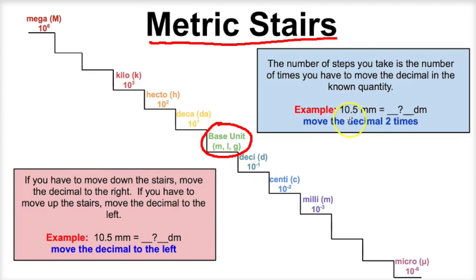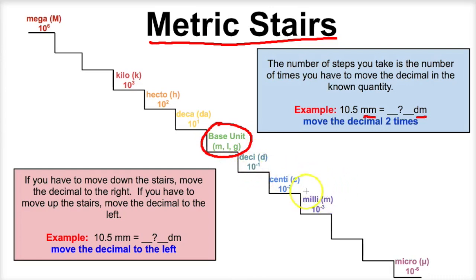So let's take a look at this example here. We have 10 and a half millimeters, and what we want to do is we want to figure out how many decimeters this is. So milli is right here on the metric stairs, and deci is right here. To go from milli to deci, that's going to be one, two steps. So we have to move this decimal two times.